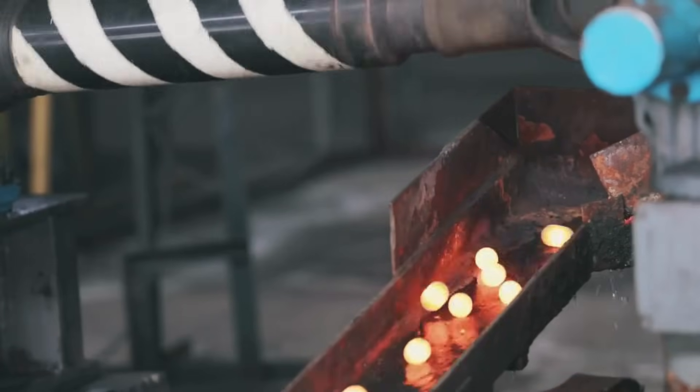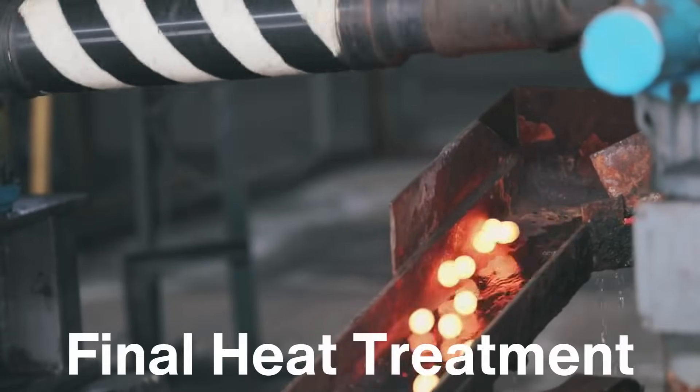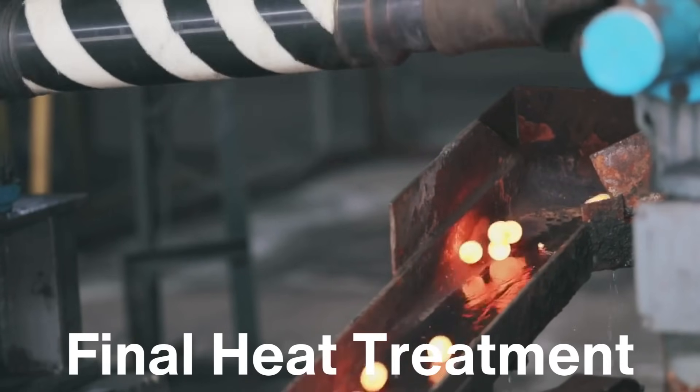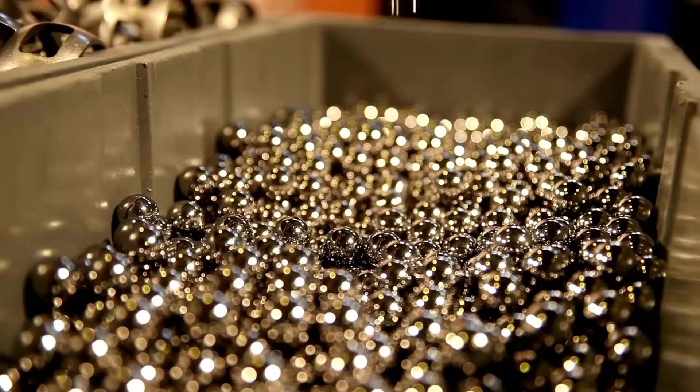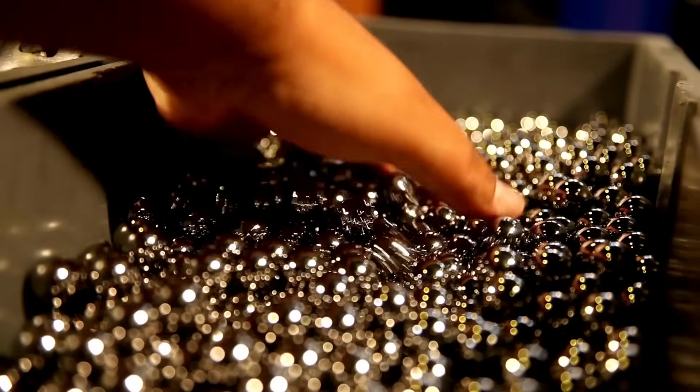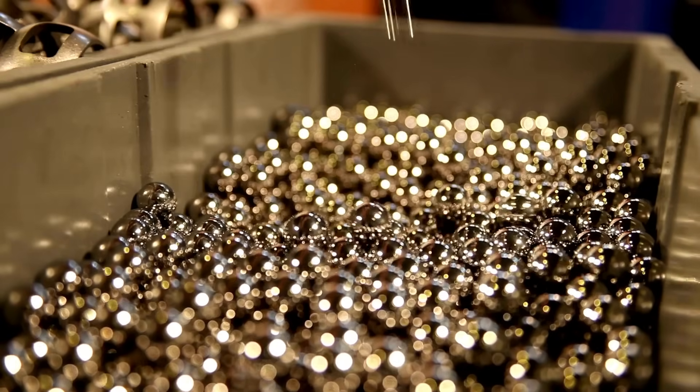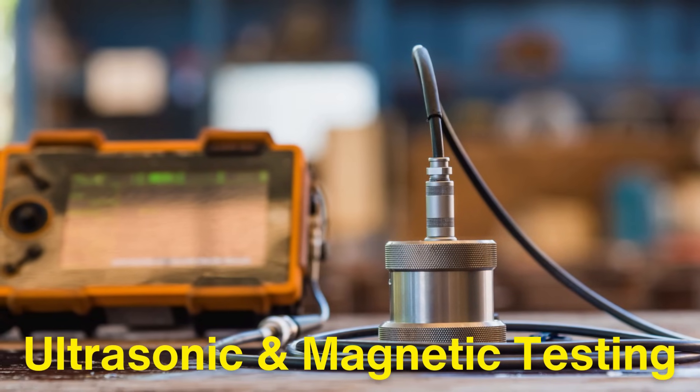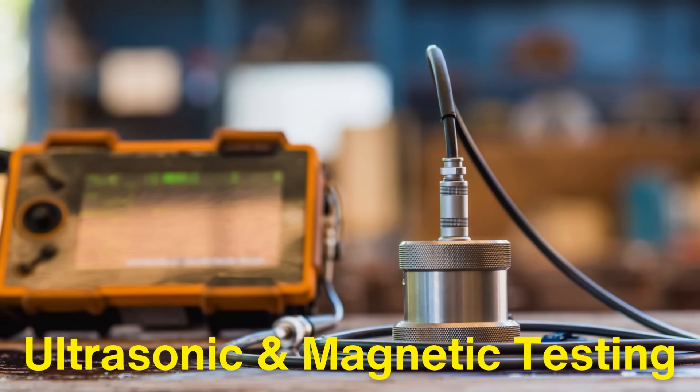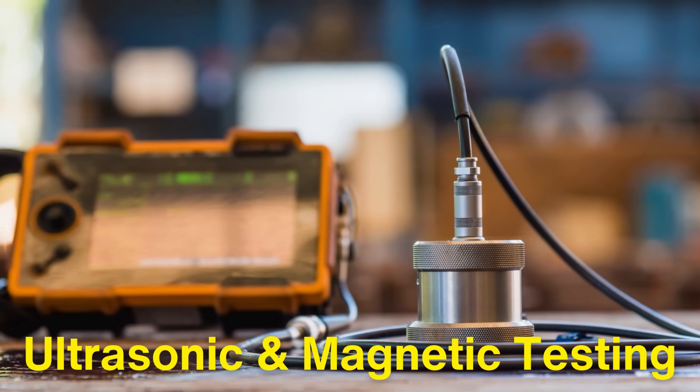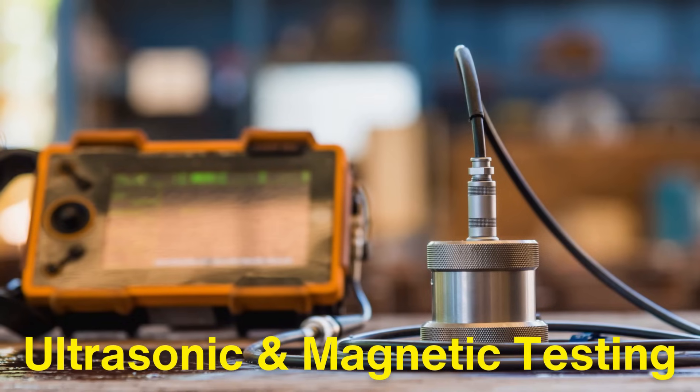After grinding and lapping, the balls undergo a final heat treatment to harden the surface and improve their resistance to wear. Once hardened, the balls are inspected for defects, such as cracks or surface irregularities, using advanced testing techniques, including ultrasonic and magnetic testing. Only balls that pass these stringent quality checks move on to the next stage of production.